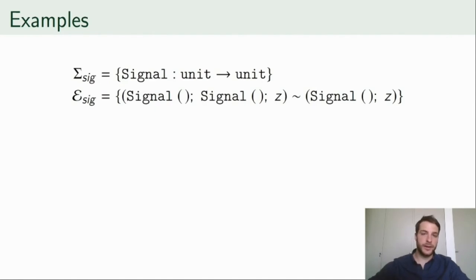And in the effect theory, we can be a bit more expressive. The equation states that if we signal twice and then proceed with an arbitrary computation z, it's no different than if we signal only once and then continue with z.